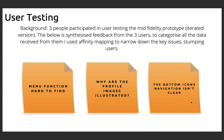I then moved on to user testing and asked three people to participate. I asked them to do what they would regularly do with a website on a phone. I synthesized their feedback, categorized all the data, and used affinity mapping to narrow down the key issues. The main ones were: the menu function was hard to find, users wondered why the images were illustrated rather than real-life, and the bottom icons' navigation wasn't clear.